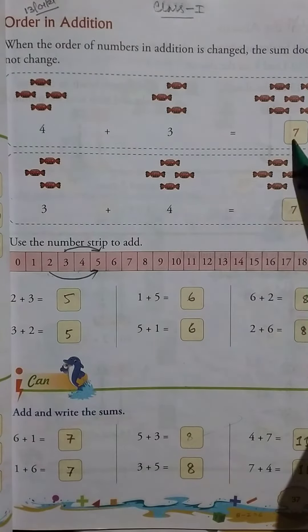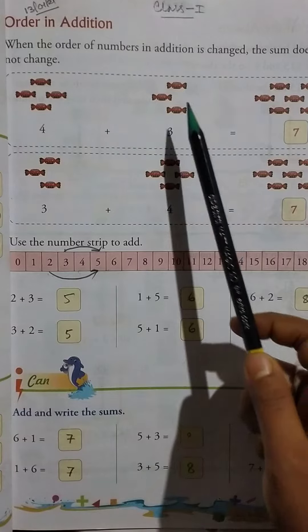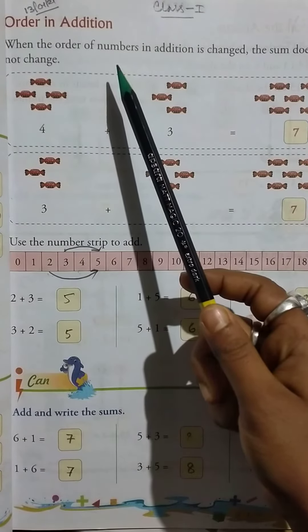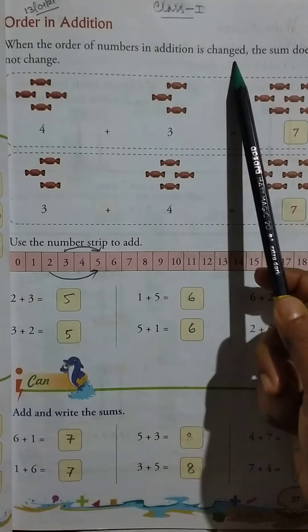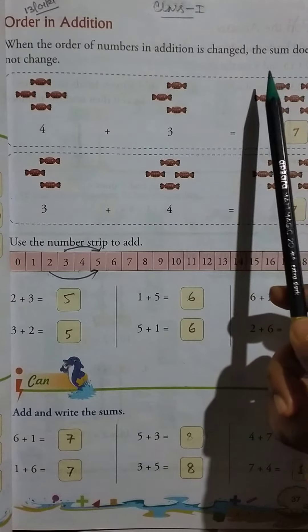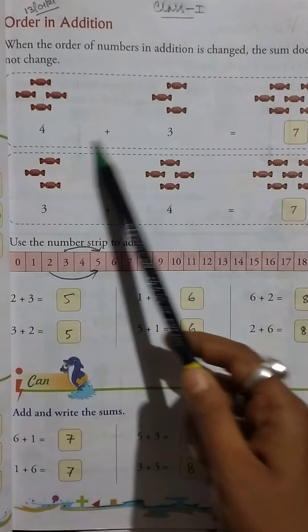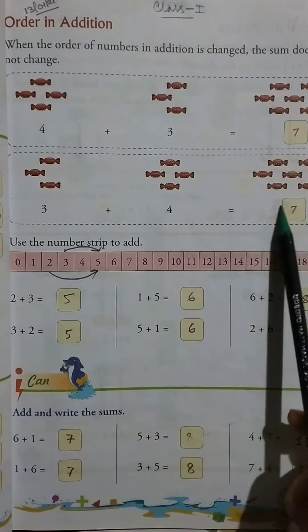Order in Addition. When the order of numbers in addition is changed, the sum does not change. So here, 4...